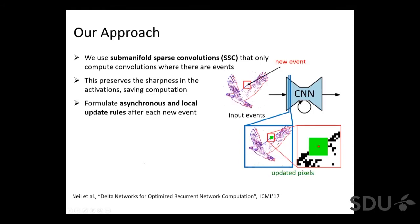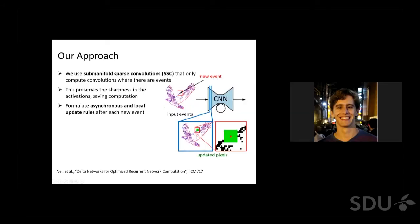In addition, we formulate asynchronous and local update rules for each new event. This means that for each new event only relevant pixels are updated at each layer, which leads to a large reduction in computational complexity. To illustrate this, here I've indicated again a single pixel updating the image in this red square. And now we can see in green again the updated pixels as we move down into the network. As we are moving down into the network, this region expands. However, compared to the previous approach of processing all of the pixels, we're now only looking at a very small subset.